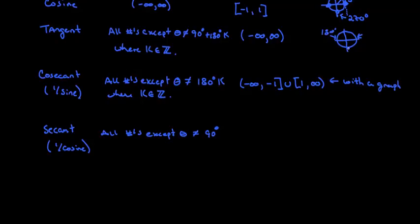Cosine 0 down here at 270 degrees. So basically 90 plus 100 half revolutions, multiples of half revolutions, so 180k.